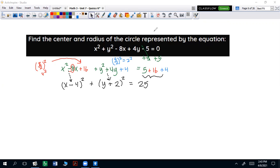Now we can pull out the center. Let's just take the opposite of those signs. So that's going to be 4, negative 2. And then the radius is going to be the square root of 25. So the radius is going to be 5. So your center is going to be 4, negative 2, and your radius is 5.